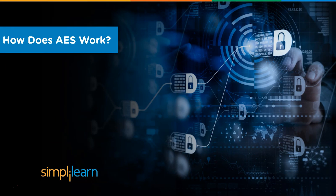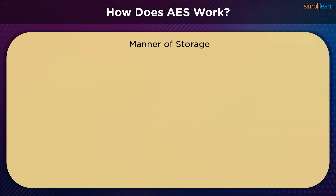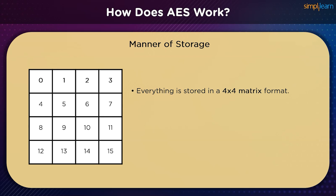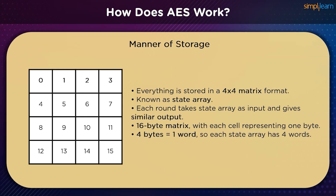Before we look at the steps, we need to understand how data is stored during the AES encryption process. Everything is stored in a 4×4 matrix format, also known as a state array. State arrays are used to transmit data from one step to another and from one round to the next. Each round takes a state array as input and gives a state array as output. It is a 16-byte matrix with each cell representing one byte, and each four bytes representing a word, giving four words total.